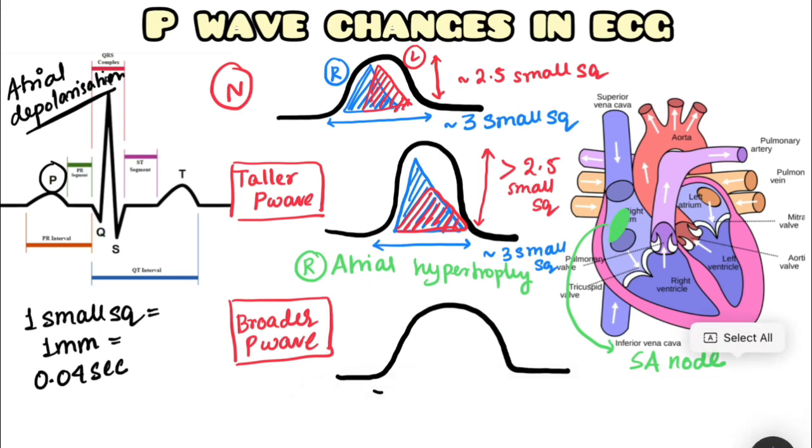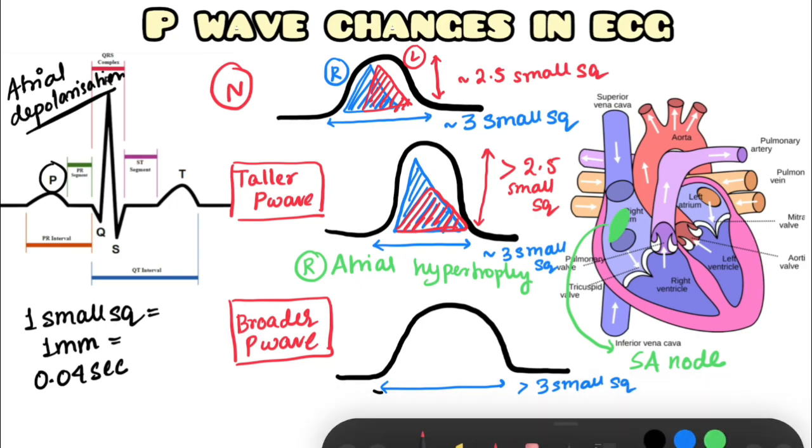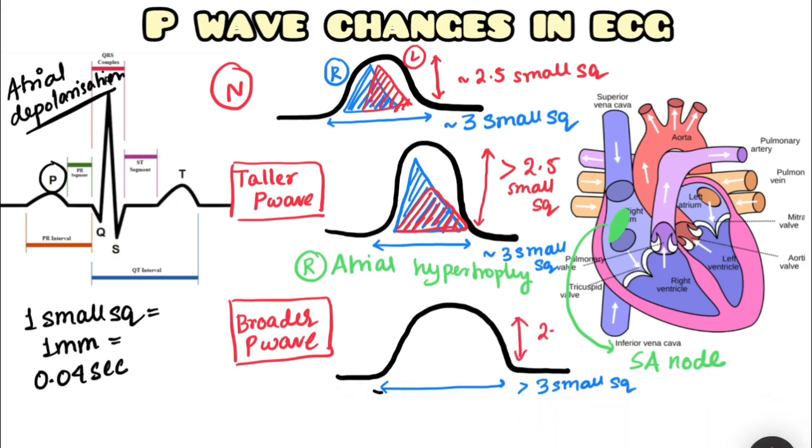That means the width or breadth of the P wave is more than three small squares. However, the height remains within the normal range, approximately 2.5 small squares. This happens in a condition known as left atrial hypertrophy.